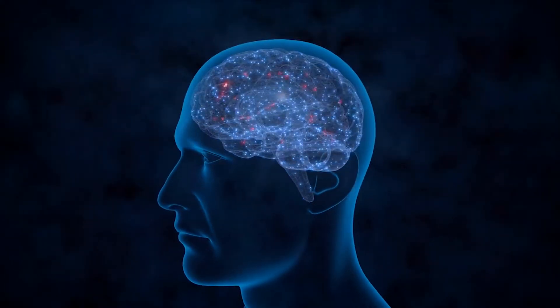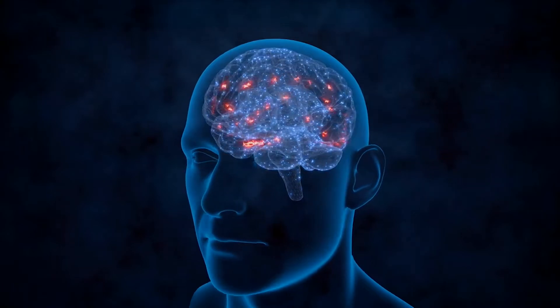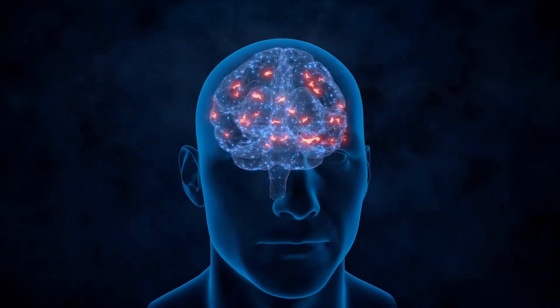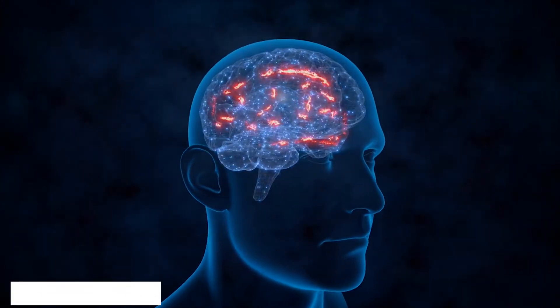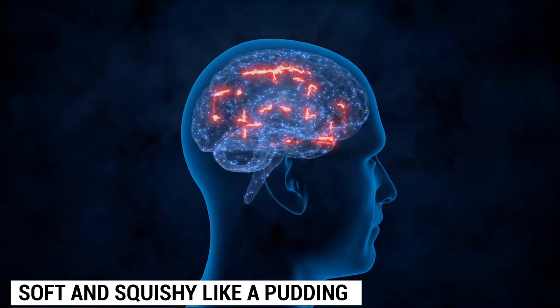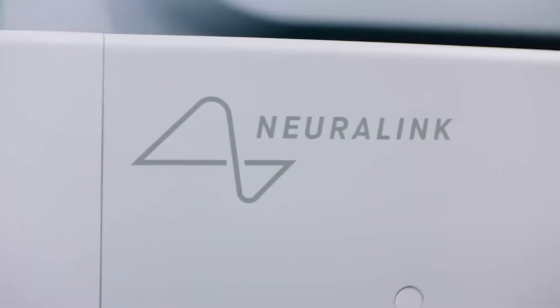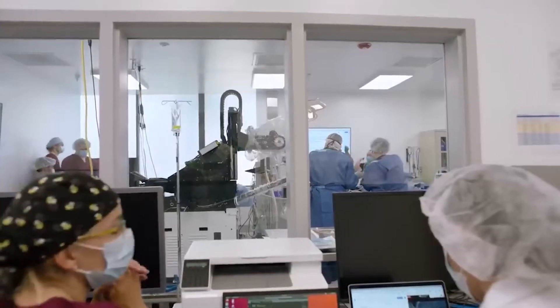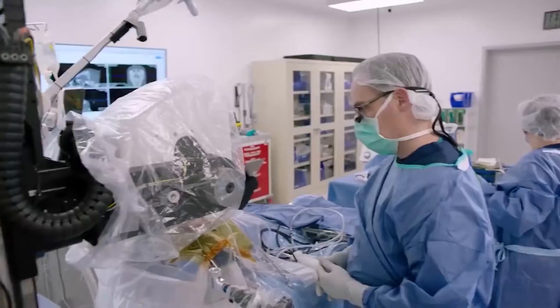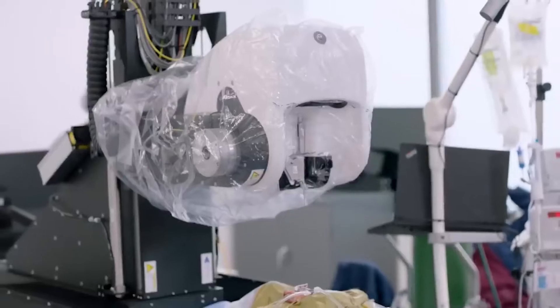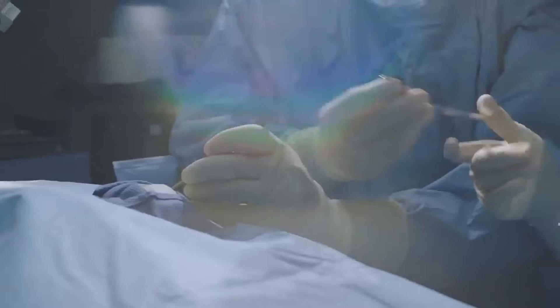For the longest time, it has been extremely difficult to build the right kind of materials for brain implants because our brain is soft and squishy like a pudding. Electronics, on the other hand, are rigid. This makes designing a brain implant extremely tricky. It's like trying to place a metal spoon in a bowl of jelly and expecting the metal spoon to stay intact.